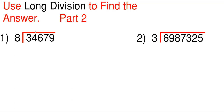So utilizing long division, what we're going to have here are two problems that we are going to solve. The first one will be 34,679 divided by 8, and then this big old monster number over here divided by 3. It really doesn't matter how long the numbers are — you still do the same process overall. So let's start with number 1 over here.